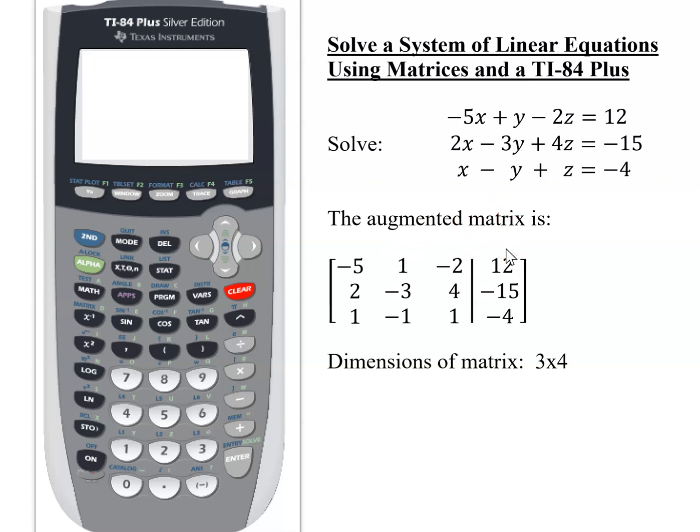And the last column is the constant. So now row two would just be 2, negative 3, 4, negative 15, and row three is 1, negative 1, 1, negative 4.